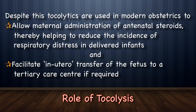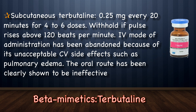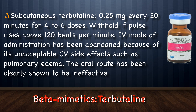The commonly used beta-sympathomimetic drugs for pre-term labor are terbutaline and ritodrine hydrochloride. Terbutaline is given subcutaneously at 0.25 mg every 20 minutes for 4–6 doses and should be withheld if pulse rises above 120 beats per minute. Intravenous terbutaline has been abandoned due to unacceptable cardiovascular side effects such as pulmonary edema, and the oral route has been clearly shown to be ineffective.